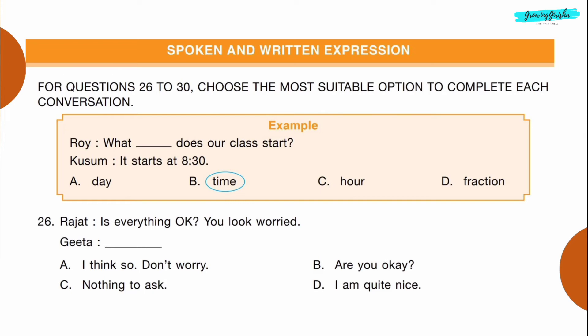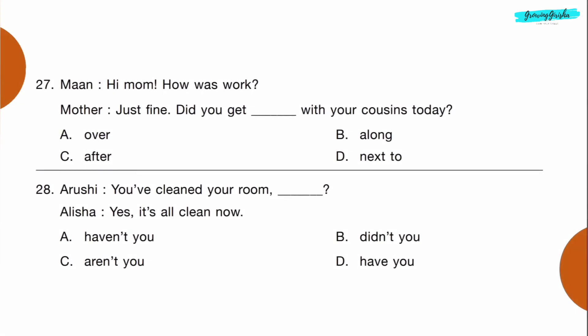Question 26 — Rajat: Is everything OK? You look worried. Gita: dash. Option A: I think so, don't worry. Question 27 — Man: Hi Mom, how was work? Mother: Just fine. Did you get dash with your cousins today? Option B: along.